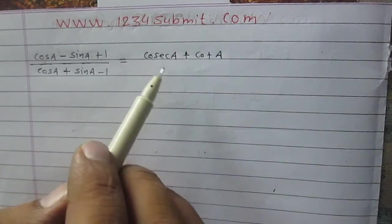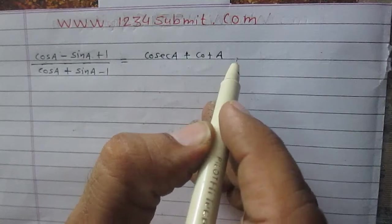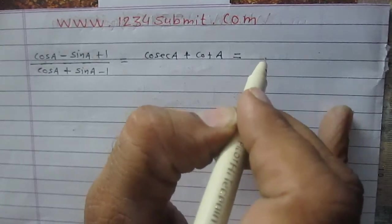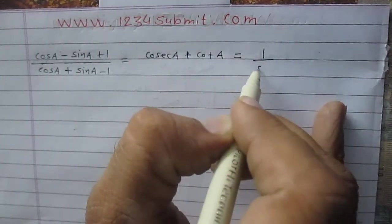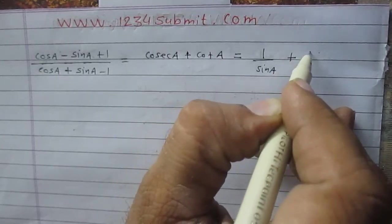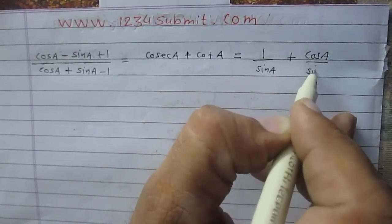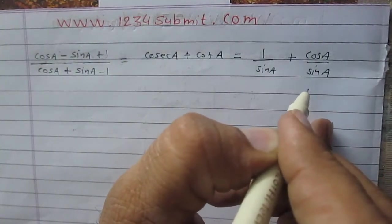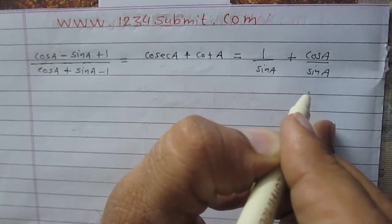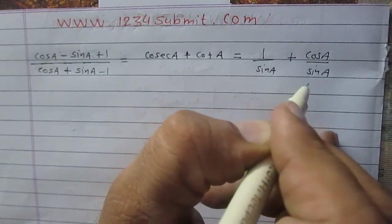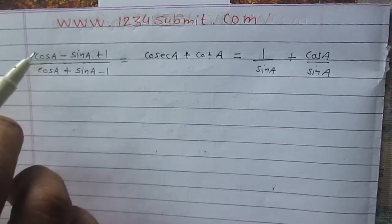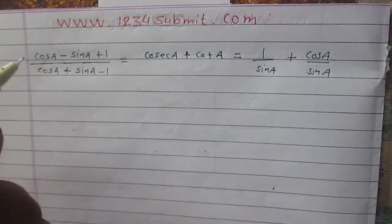The right hand side is cosecA plus cotA. There are two terms: cosecA and cotA. CosecA can be written as 1 upon sinA, and cotA is cosA upon sinA. Since sinA is present in the denominators of both fractions, we will divide the numerator and denominator of the left hand side fraction by sinA.